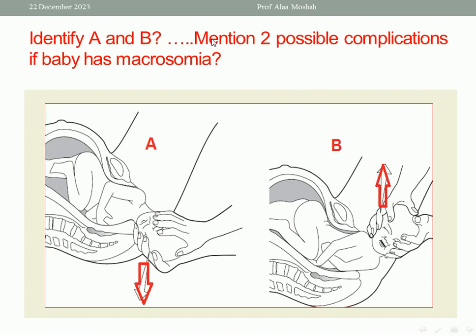Another part of this question mentions two possible complications if the baby has macrosomia. Suppose the baby has macrosomia with broad shoulders — a complication like shoulder dystocia may happen, for example, along with brachial plexus injury. So shoulder dystocia may occur where you cannot deliver the shoulder after the head. This is called shoulder dystocia. Brachial plexus injury may also happen.